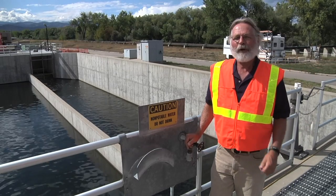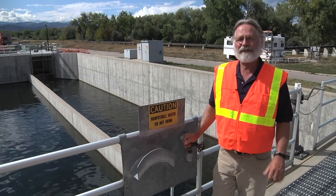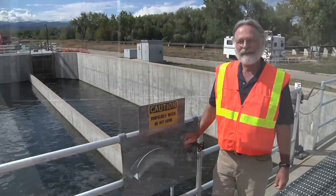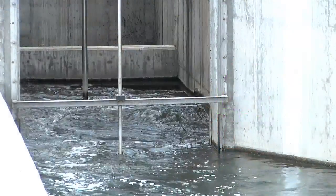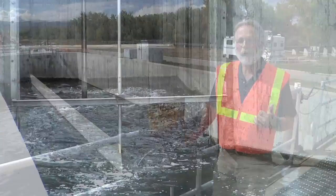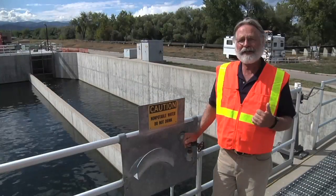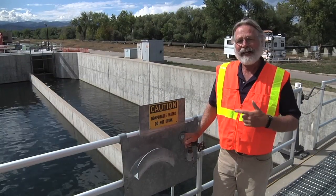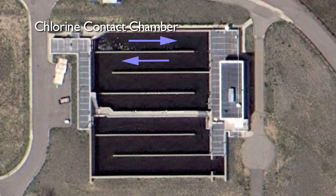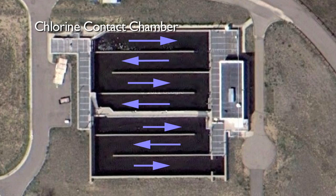We're at the chlorine contact chamber where we disinfect the effluent from our secondary wastewater treatment process. We add chlorine at the beginning of this basin because what we need is a chlorine concentration and a contact time. The basin has a number of baffles in it so the water flows through it and takes a long time to get to the end, but during that time the chlorine removes the pathogens that are left in the water.